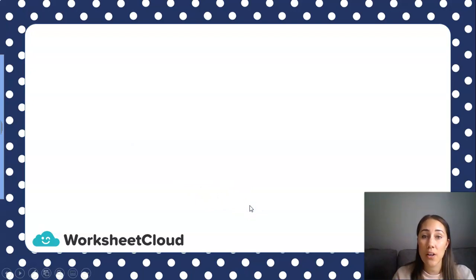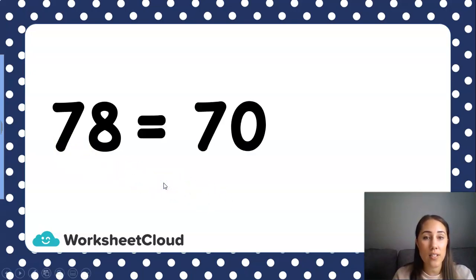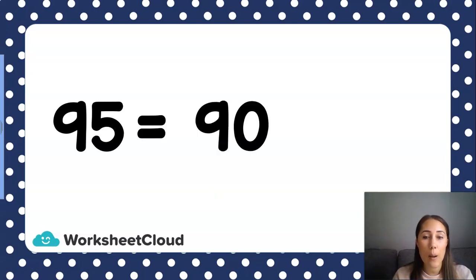So now that I've done that with counters or with blocks, let's see if we can rename 78. 78 is equal to 70, 7 groups of 10 plus an 8. Let's try another one. We have 95. 95 is equal to a 90 plus a 5.